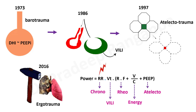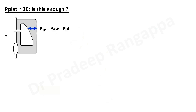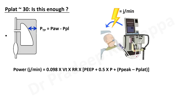The question arises: is P-plat of 30 enough? Transpulmonary pressure — airway pressure minus pleural pressure — may not be the only indicator of safe ventilation. Mechanical power is the energy that a ventilator transfers to a ventilated patient, causing lung injury. All settings — respiratory rate, flow, volume, PEEP, driving pressure, P-plat — when we set these, there is a transfer of energy calculated as joules per minute, which is mechanical power.